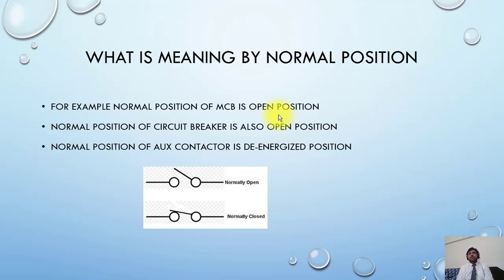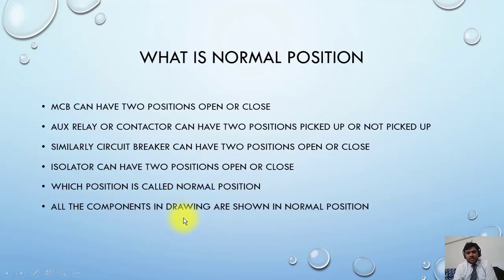So if you have any auxiliary contact, this contact will be shown in de-energized or deactivated mode. You have to take special care of this logic to easily understand the concept. An MCB can have two positions: open or closed. An auxiliary contactor can have two positions: picked up or not picked up. Similarly, a circuit breaker can have two positions: open or closed.